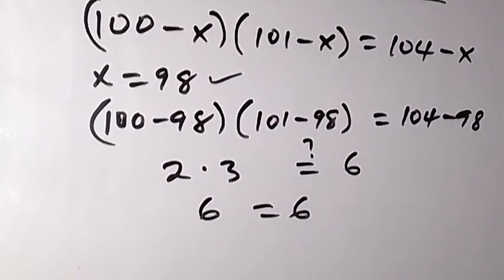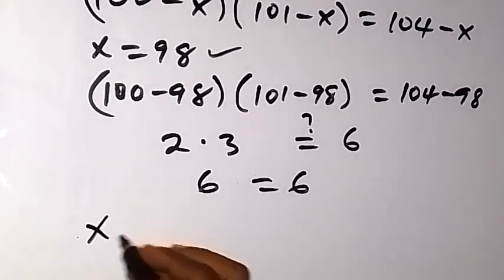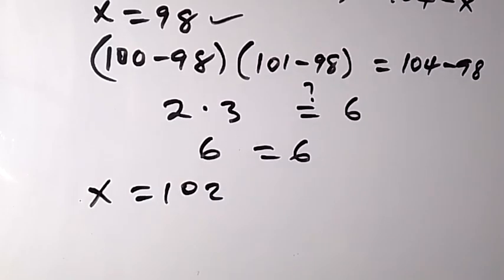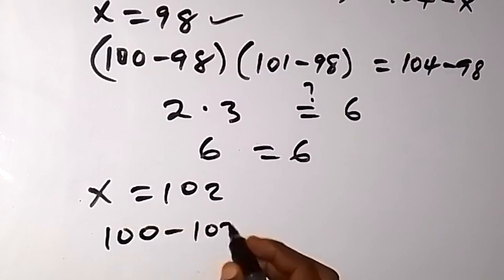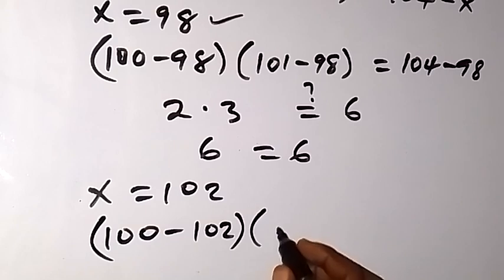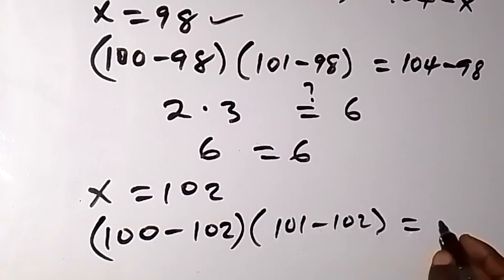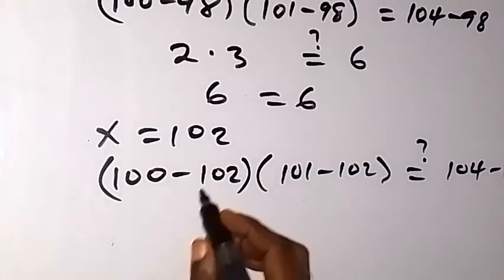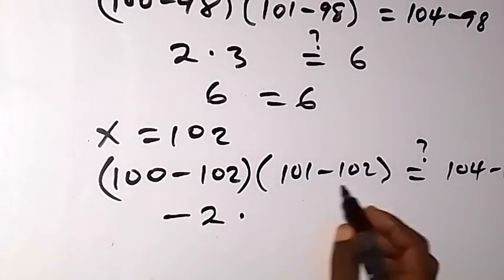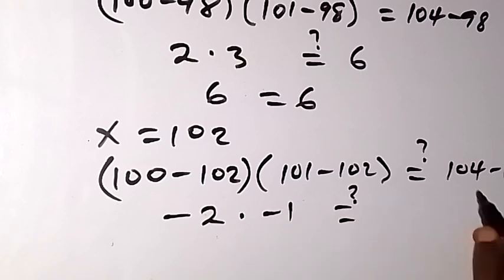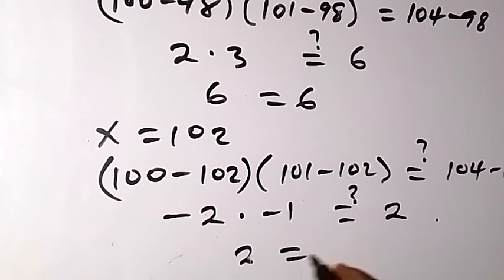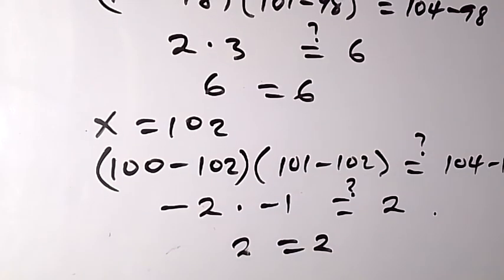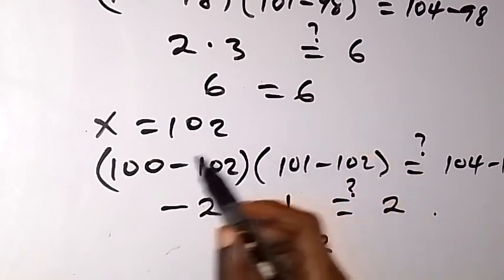For x = 102, putting it into the equation: (100 - 102)(101 - 102) = 104 - 102. We get (-2)(-1) = 2. Minus 2 times minus 1 equals 2, and 2 equals 2, so the left hand side equals the right hand side. Therefore x equals 102 also satisfies this problem.